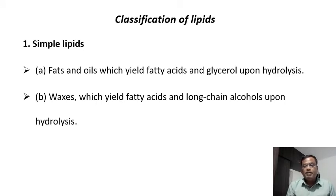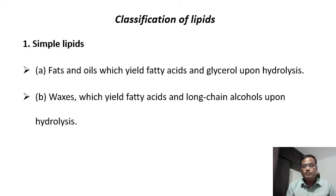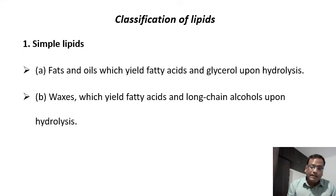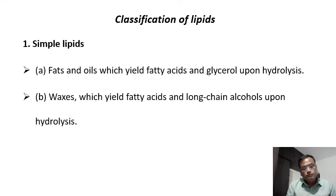Waxes are also lipids. They are produced by some animals and even in the human body — for example, wax is produced in the inner ear, where its function is to trap dust, prevent entry of microorganisms, and protect the inner ear from infection. The honey bee is a well-known producer of wax, using it to construct their hives. Upon hydrolysis, waxes yield fatty acids and long-chain alcohols.